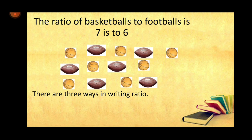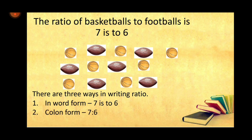In writing ratio, there are three ways. The first one is in word form, which is seven is to six. The second one is by colon form, which is seven colon six. And the last one is in fraction form, which is seven over six.